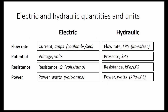These are the electric and hydraulic quantities and units. Current is like the flow rate; voltage is like pressure. Resistance in ohms — meaning volts per amp — is like hydraulic resistance in kilopascals per liter per second. Power is in watts for both cases: volt-amps in the electric case, and kilopascal-liters per second in the hydraulic case.